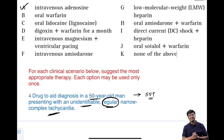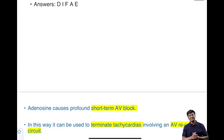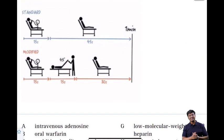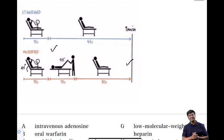In the case of SVT, the ideal drug is intravenous adenosine. But before giving adenosine, vagal maneuvers should be induced — specifically the modified Valsalva maneuver. In the modified Valsalva, position the patient with legs flat and head end of the bed at 45 degrees. Then the patient should attempt to blow out the plunger of a 10 ml syringe for 15 seconds.